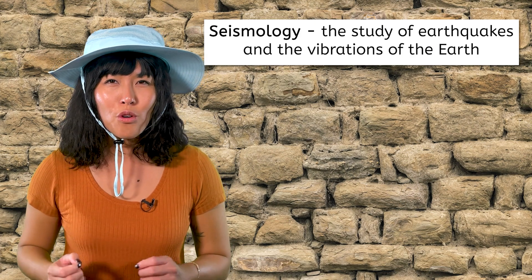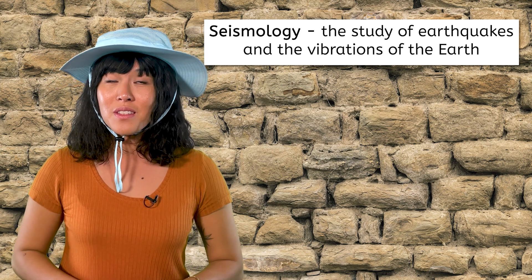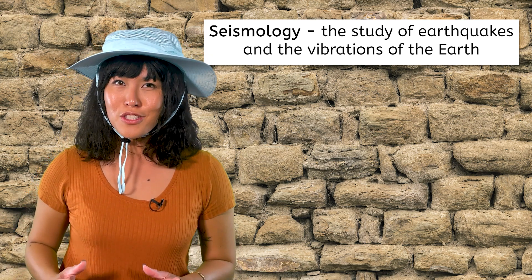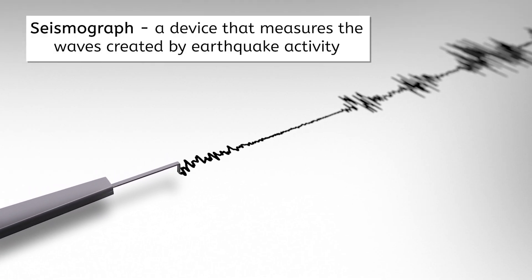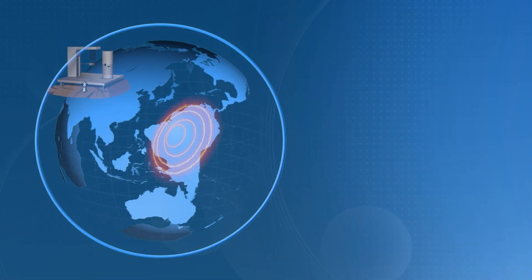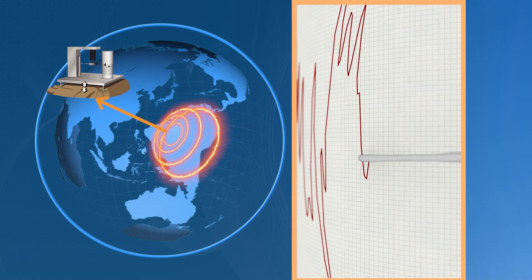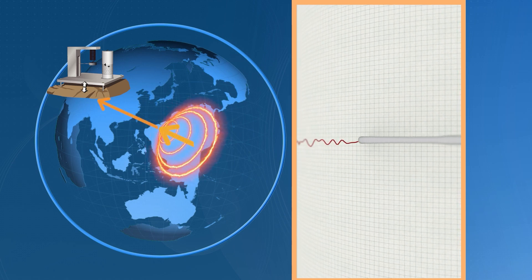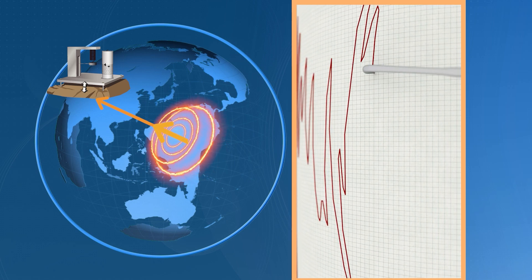Seismology is the study of earthquakes and the vibrations of the Earth. Around the same time that Wegener proposed his hypothesis of continental drift, seismologists were discovering more about Earth's structure. They accomplished this using a tool called a seismograph, which measures the waves created by earthquake activity. By using a seismograph on the opposite side of the Earth from where an earthquake occurred, seismologists were able to measure the speed of the waves as they passed through Earth's core. They noticed something peculiar — the speed of the waves increased or decreased at certain depths, suggesting layers with distinct properties.